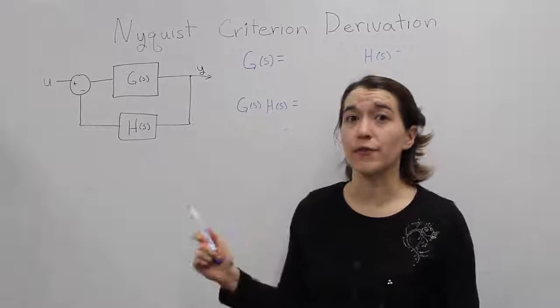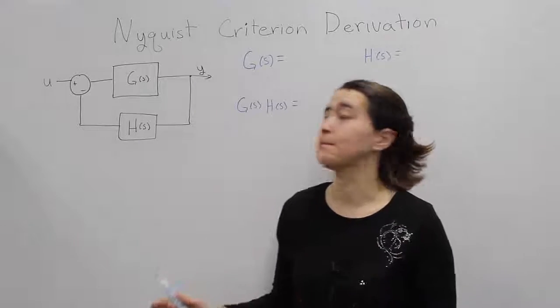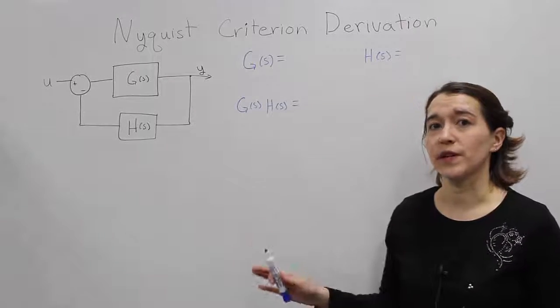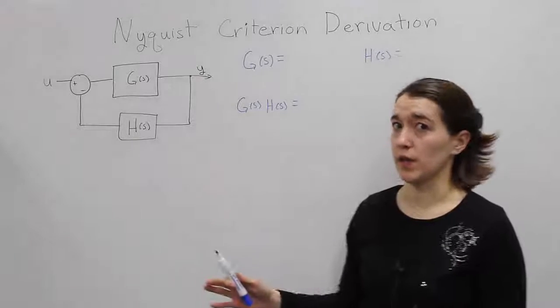Now we're going to derive the setup for the Nyquist criterion. Again, remember what we're doing is we're trying to link the open-loop characteristics to the closed-loop characteristics.